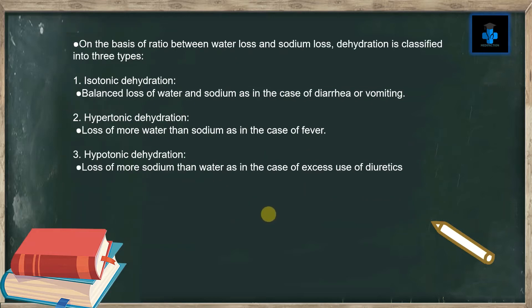On the basis of ratio between water loss and sodium loss, dehydration is classified into three types. Number one is isotonic dehydration — that is balanced loss of water and sodium, as in the case of diarrhea or vomiting. Number two is hypotonic dehydration — loss of more water than sodium, as in the case of fever. Number three is hypertonic dehydration — loss of more sodium than water, as in the case of excess use of diuretics.